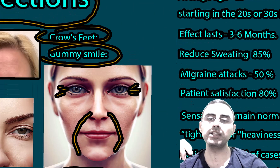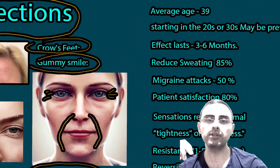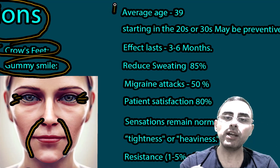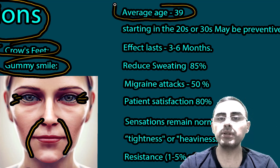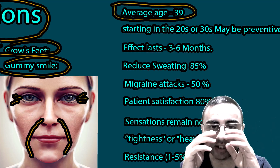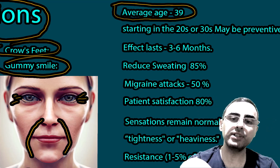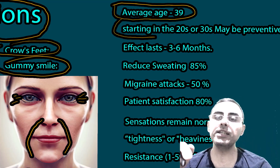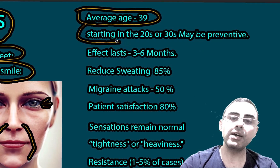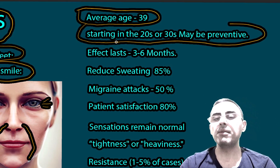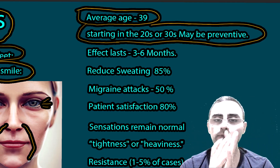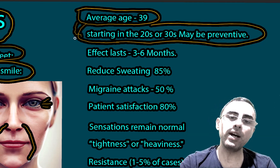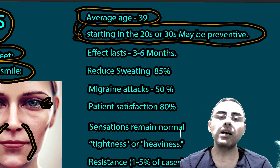Some important highlights about botulinum toxin and Botox: the average age of people who start Botox is 39. Some studies suggest that starting earlier can be preventive and may prevent further wrinkling of the face, though this finding requires further revision and is of course a highly personalized decision.